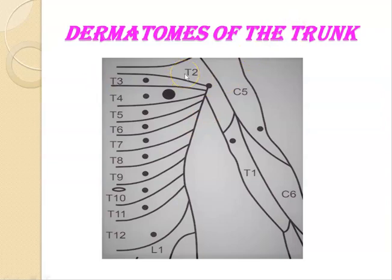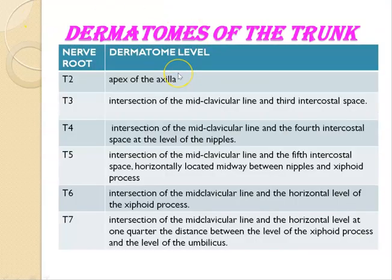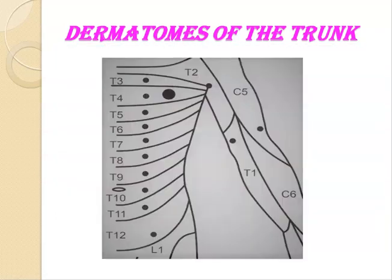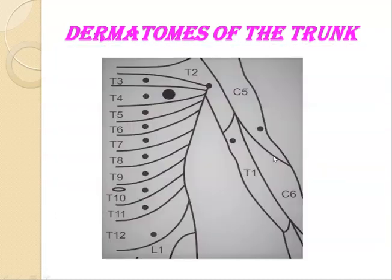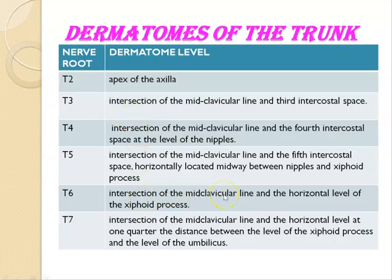This is the diagram depicting the dermatomes of the trunk. T2 is at the apex of the axilla. T3 is at the intersection of the midclavicular line and the third intercostal space. T4 is the intersection of the midclavicular line and the fourth intercostal space. T5 is the intersection of the midclavicular line and the fifth intercostal space. T6 is at the intersection of the midclavicular line and the horizontal level of the xiphoid process.